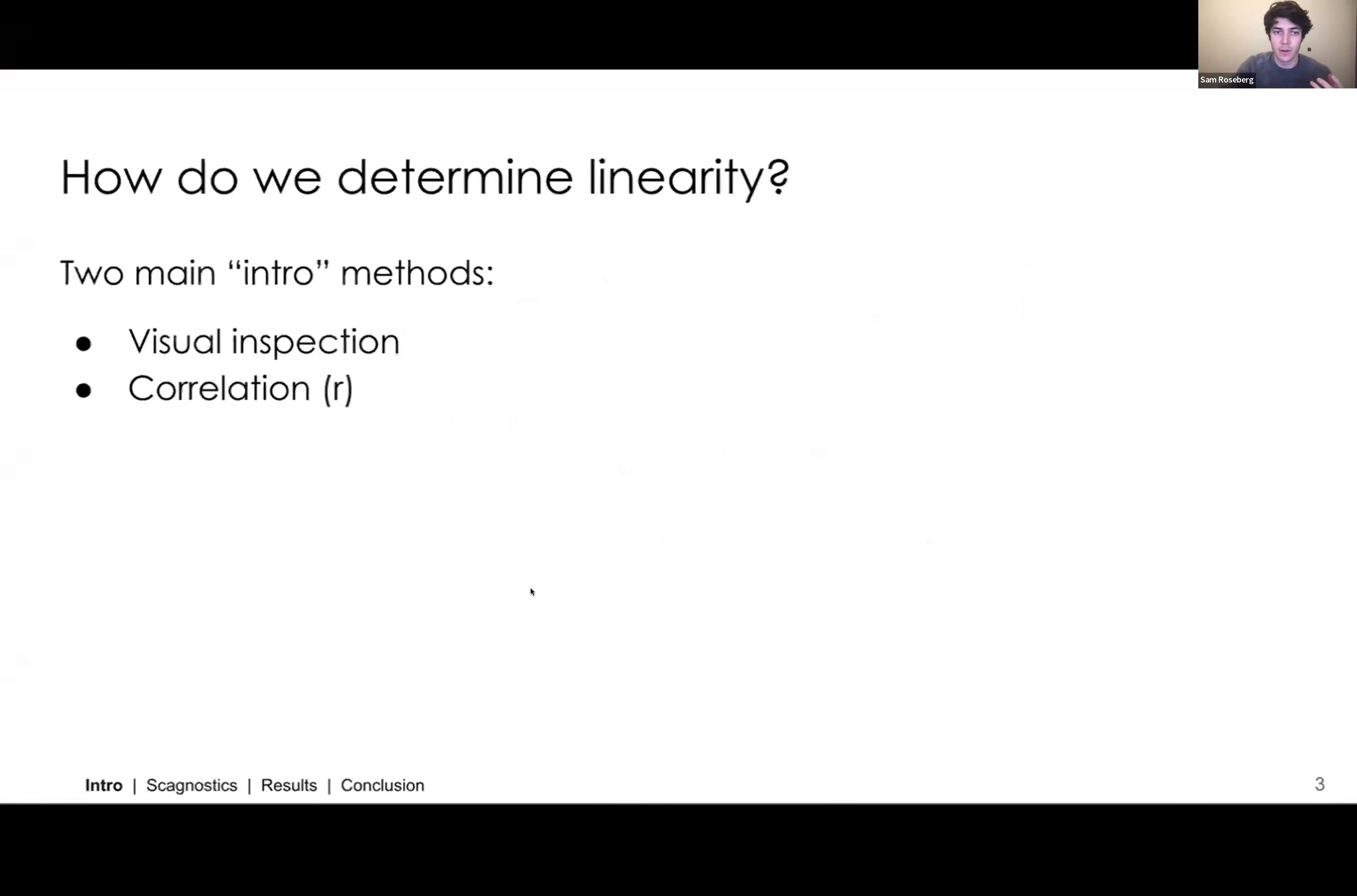Yeah, so starting off with a little bit of an introduction, sort of the motivation behind the project. And it all stems from a very simple question. How do we determine linearity? There are two main introductory base level methods for determining whether or not a graph is linear. And those are one, visual inspection. Does the graph look linear? And two, the correlation or an R value for how well a line fits the data.